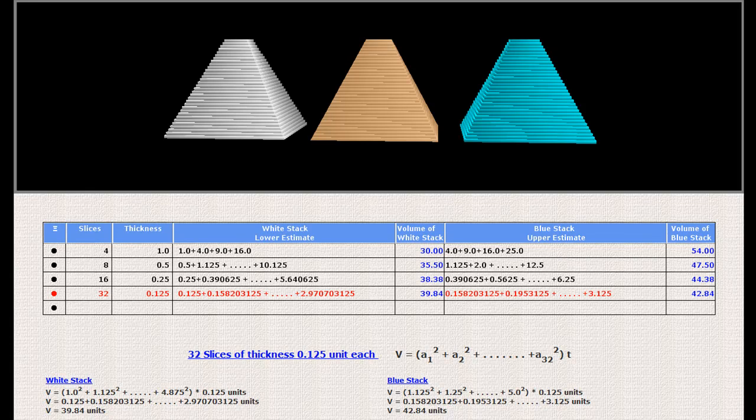With 32 slices, the lower estimate is 39.84 cubic units and the upper estimate is 42.84 cubic units.